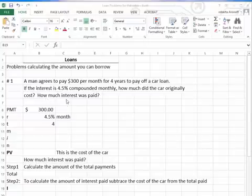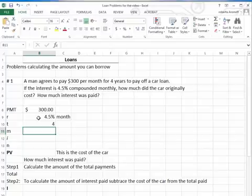And also we're going to calculate the amount of interest that was paid. Now we set up the payment. We have $300 a month. The interest rate is four and a half percent per month. The time is four years.